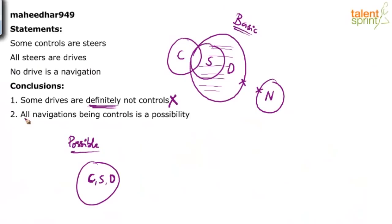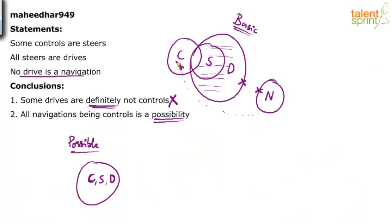Look at the second conclusion: all navigations being controls is a possibility. This is a possibility type of conclusion. The simple point you need to understand is navigation and drive cannot cross each other, but navigation can come from the side and go inside controls completely — nobody will stop that. Are we violating any statement? No. The statement says no drive is navigation — we take care of that. But navigation can go inside controls without touching drives. So, all navigation being controls is possible.